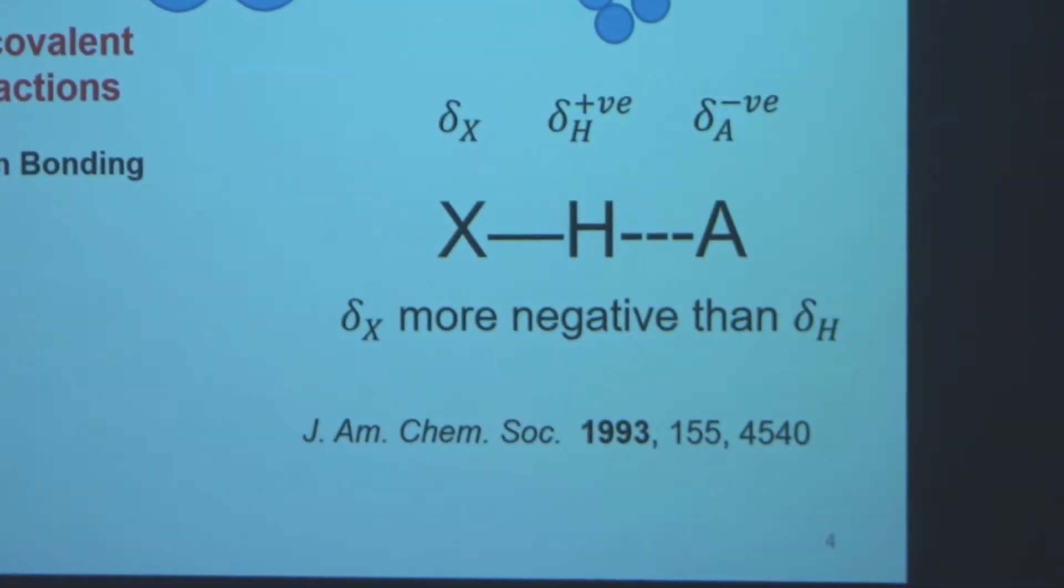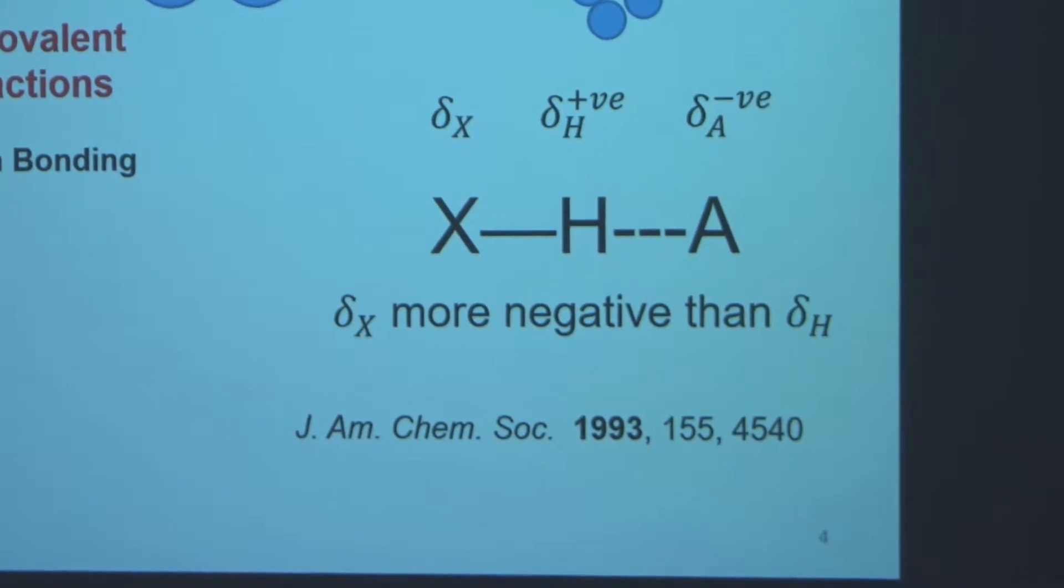Now, I've mentioned non-covalent interactions. There's a wide variety of non-covalent interactions that have been used. Some of the most popular happen to be hydrogen bonding. Now, hydrogen bonding is where we have hydrogen covalently bonded to some atom X that's electronegative, and this creates a partial positive charge on the hydrogen. Now, this partially positive hydrogen can interact with a partially negatively charged acceptor, giving us this geometry X-H-A.